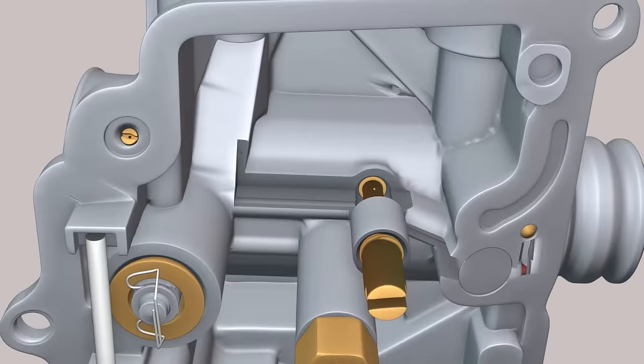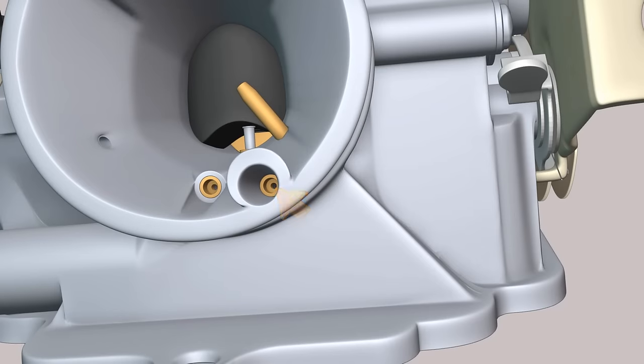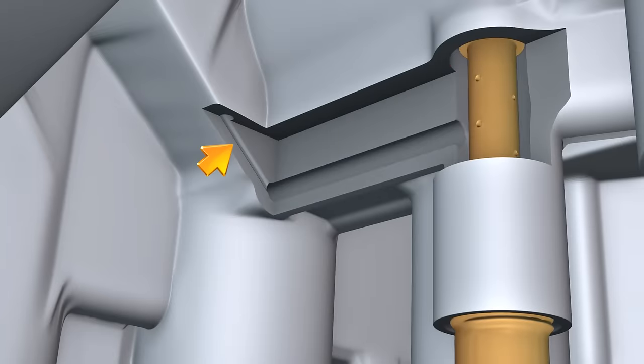At idle, i.e. when the throttle is closed, the engine is supplied with fuel-air mixture through the idle channel. The channel starts with the idle air nozzle. The channel is then joined by an additional air channel.